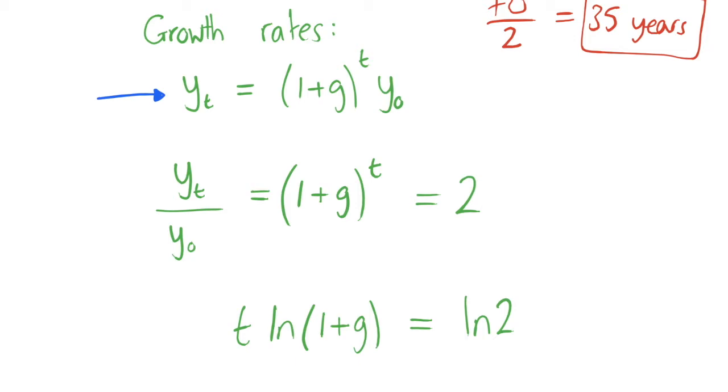Notice that this 1 plus g here is showing that this g is no longer in percentage terms as I said at the start, so this g for 2% would be 0.02. If we don't know where this relationship comes from, we should know that y1 is equal to just 1 plus g multiplied by y0, and as we go up to time t, we're just multiplying by the growth rate year on year.